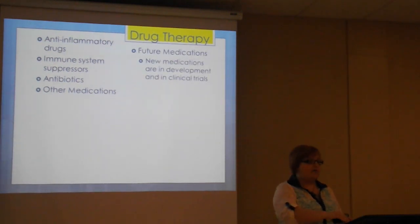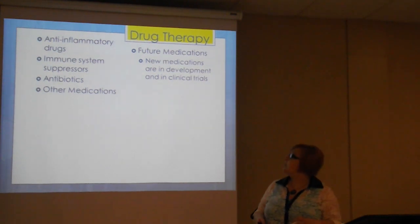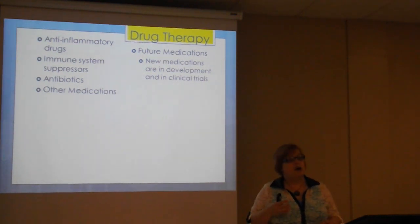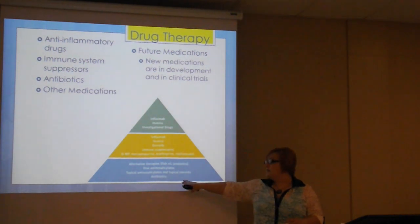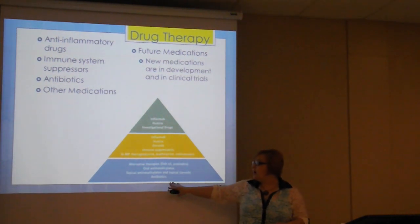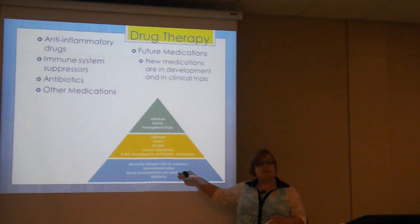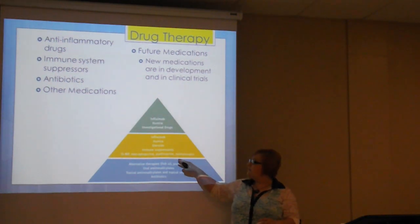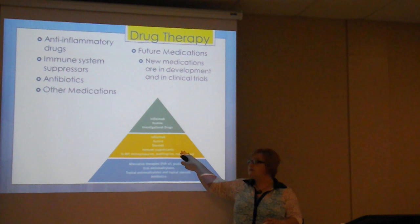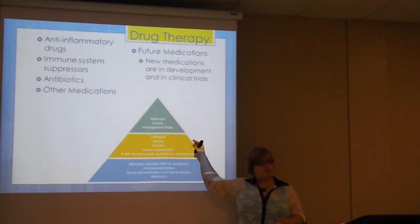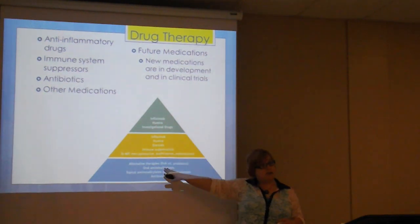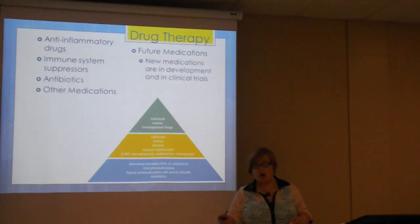As for future medications, there are always options for clinical studies and trials since the cause and cure aren't known. The treatment pyramid shows mild Crohn's patients at the bottom, treated with antibiotics and alternative therapies such as fish oils or probiotics. Moving up, moderate cases are treated with immune suppressors or steroids. At the very top, severe cases that don't respond to other treatments may receive more investigational drugs along with biologics like Humira.